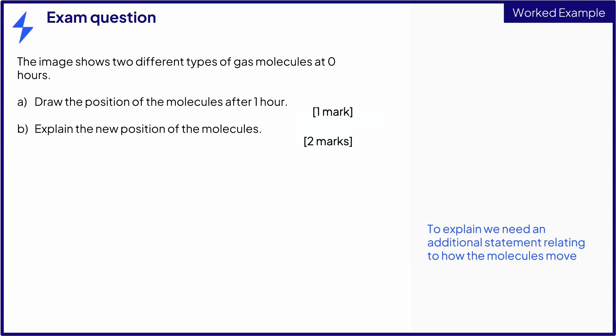For part B, we need an explanation for two marks. The movement of particles has occurred via diffusion for one mark. We need to explain this so we can add that molecules have moved from an area of high concentration to an area of lower concentration.